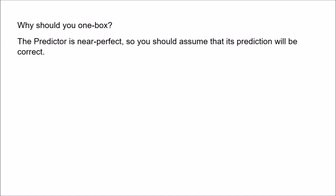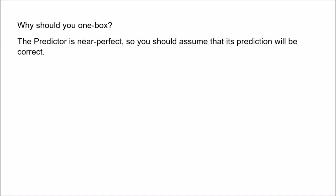Why should you one-box? Given that the predictor is near perfect, you should act on the assumption that the predictor's prediction will be correct. The decision you make will be a very good indicator of what the prediction was. So you should think: if you one-box, the predictor will have predicted this and you'll get the million. If you two-box, it will have predicted this and you'll get only a thousand. No matter how clever the argument for two-boxing is, if you are led to two-boxing, you are almost certainly walking away with only a thousand pounds, whereas I'm walking away with a million. So obviously, you should take one box.